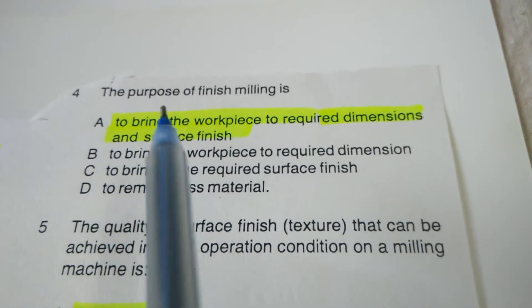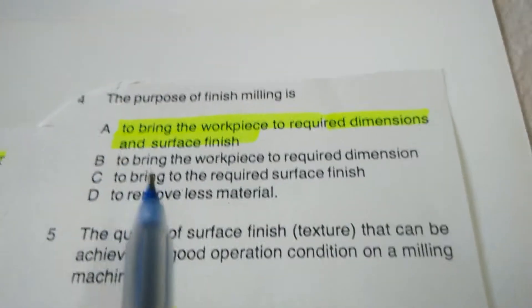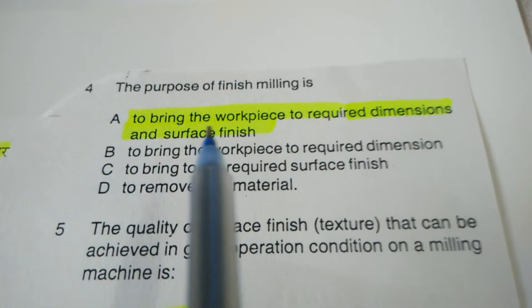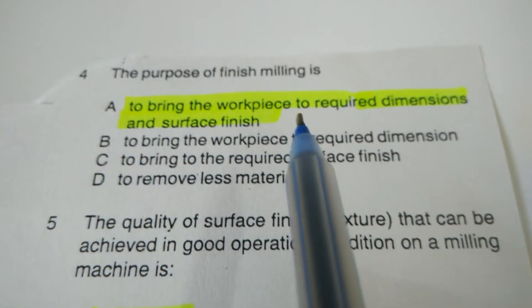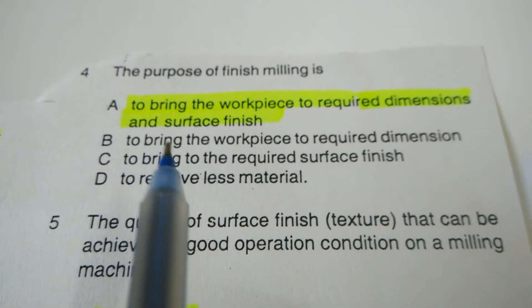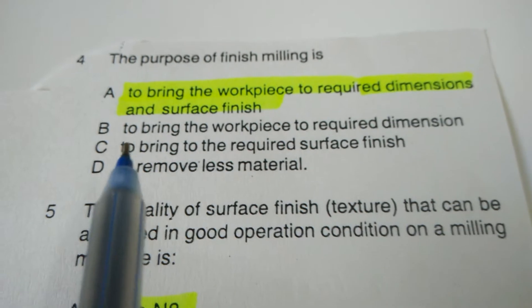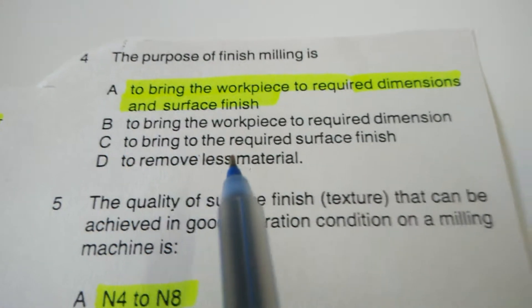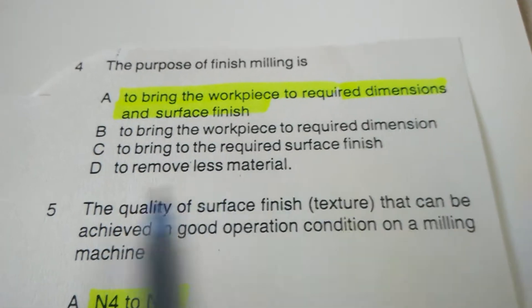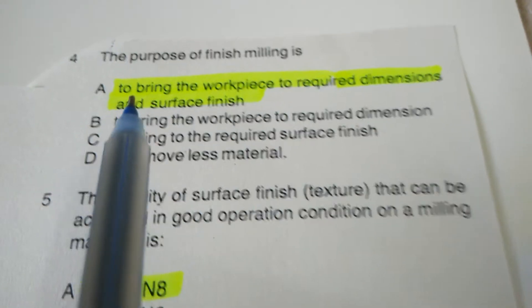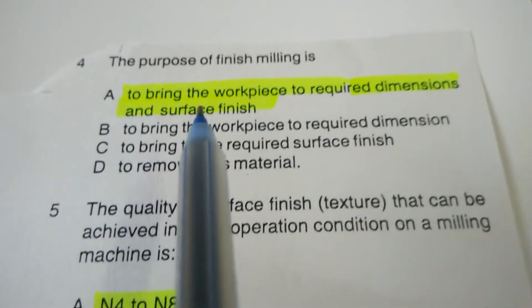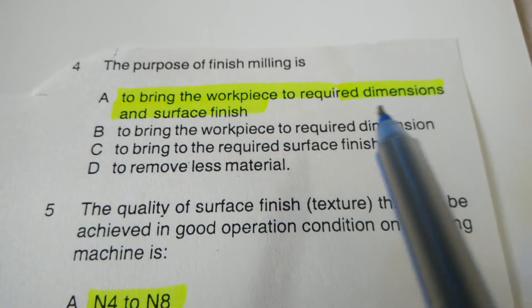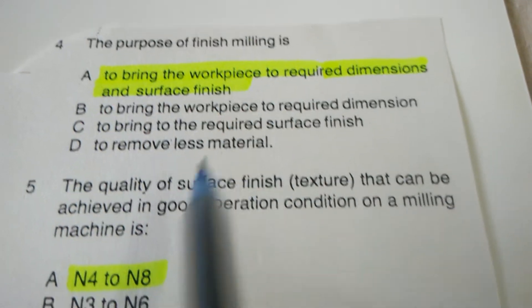Next objective: The purpose of finish milling is — to bring the workpiece to the required dimension, to bring the workpiece to the required dimension and surface finish, to bring the required surface finish, or to remove less material? The correct answer is to bring the workpiece to the required dimension and surface finish.